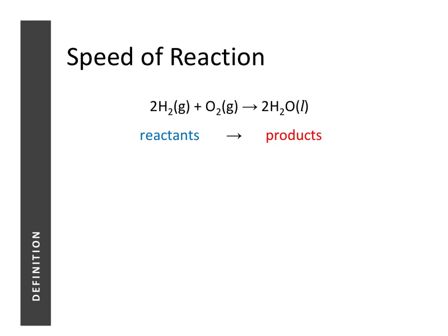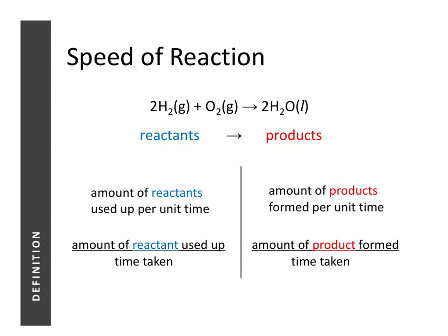In a chemical reaction, reactants are being converted into products. Speed of a reaction can be defined either in terms of how fast the reactants are being consumed or how fast the products are being formed. More scientifically, it is the amount of reactants used up per unit time, or the amount of products formed per unit time. As an equation: speed of reaction = amount of reactants used up / time taken, or amount of products formed / time taken.